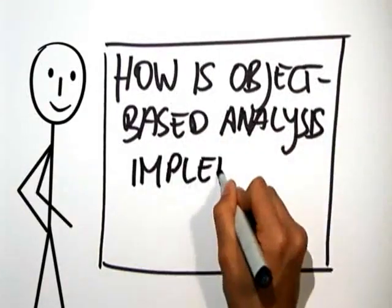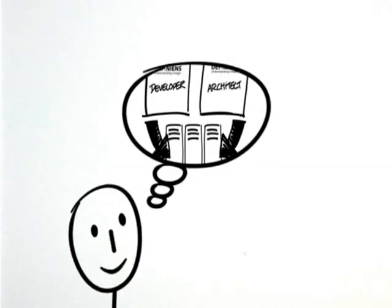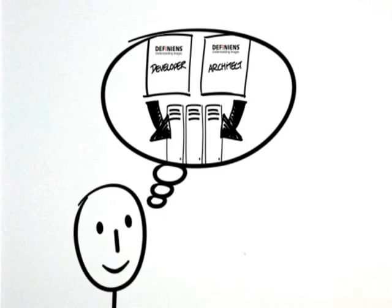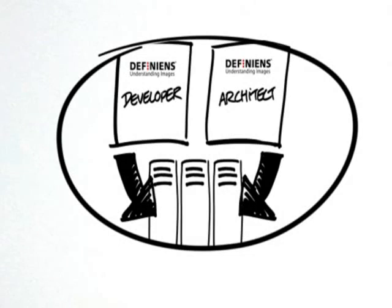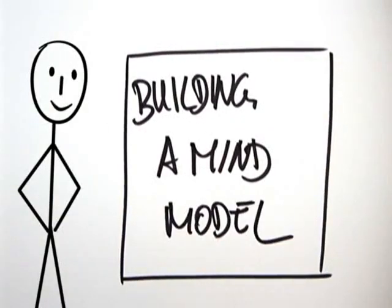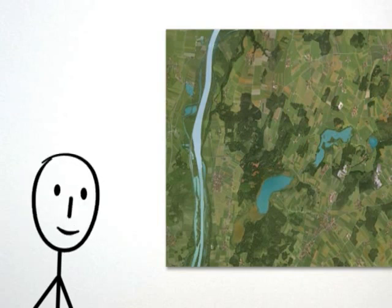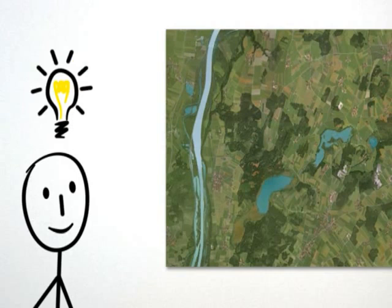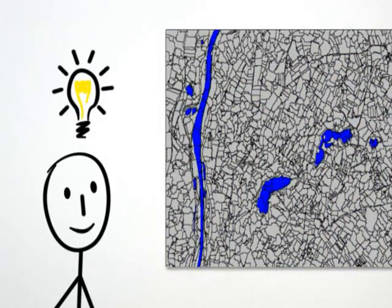So how is object-based analysis implemented in Definiens software? With Definiens Developer, you can translate a model generated in your mind into computer-understandable code and apply an image analysis routine to a multitude of images. Building a mind model is easy — it's something you learned long ago when you were still a child. Simply look at an image and define the distinctive characteristics of things you want to extract. You automatically aggregate individual pixels into meaningful groups we call objects. So here's rule number one in your mind model: pixels are aggregated, resulting in image objects.